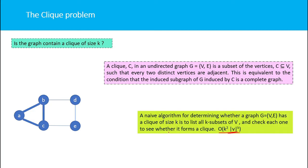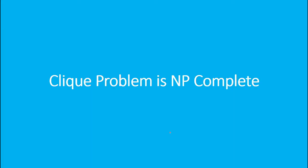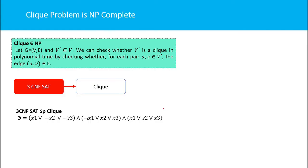Since the naive approach is not polynomial, the clique problem is not a P problem. The clique problem is NP-complete, and we must prove this. First, we will prove the clique problem is an NP problem — NP problems are problems that are verifiable in polynomial time.